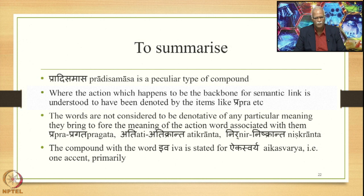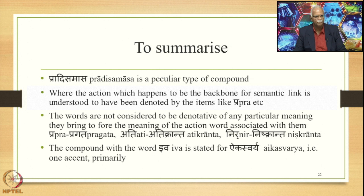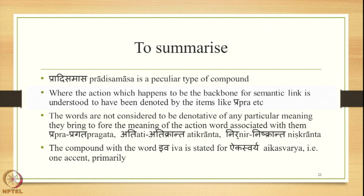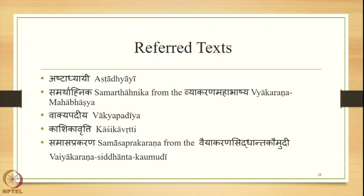To summarize: pradi-samasa is a peculiar type of compound, part of the Tatpurusha umbrella, where the action serving as the backbone for the semantic link is understood to be denoted by items like pra etc. The words bring to the fore the meaning of the action word associated with them — so pra stands for pragata, ati for atikranta, and nir for nishkranta. The compound with the word iva is stated for aikasvarya, namely one accent primarily. We continue studying the Gati-Tatpurusha Samasa in the coming lectures. Thank you very much.